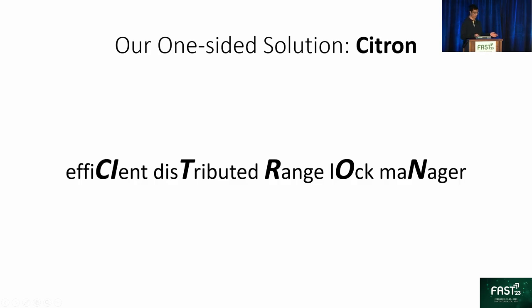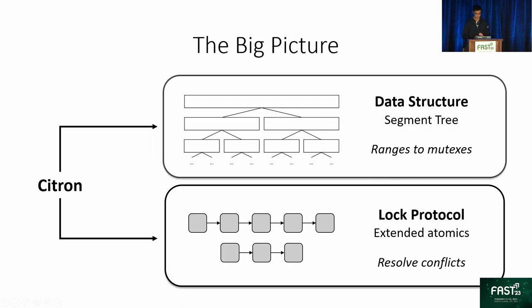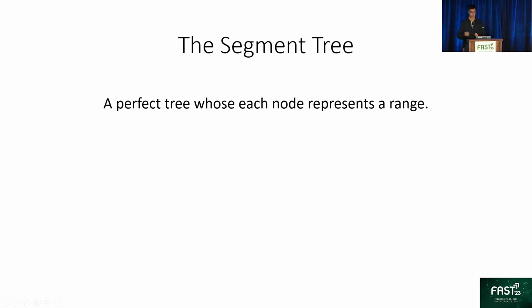Citron is an acronym for Efficient Distributed Range Lock Manager. It is essentially a comprehensive and complex lock protocol, so we will only focus on its most important parts today. Citron consists of two main parts: a data structure for range lock management, and a matched protocol. We have a tree data structure located at server-side memory, and all clients access the data structure following our lock protocol with RDMA verbs. We first translate ranges into nodes on the tree, then employ the lock protocol to resolve conflicts between different tree nodes.